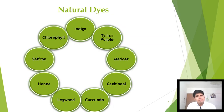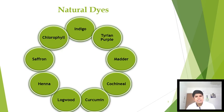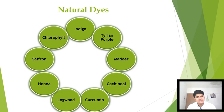Now, what are the types of natural dyes? These three types are the main general types. The specific dyes we will discuss are: indigo, Tyrian purple, madder, cochineal, curcumin, logwood, henna, saffron, and chlorophyll — these are the nine main dyes to discuss in this video. Let's see indigo dye.